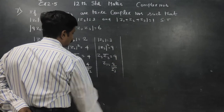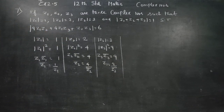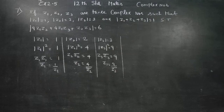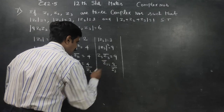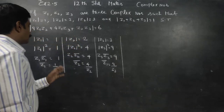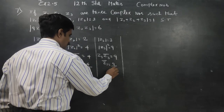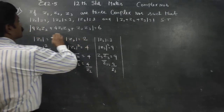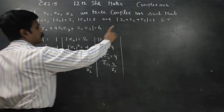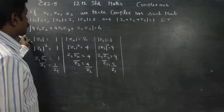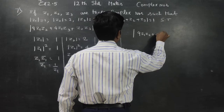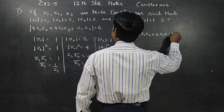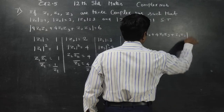After establishing these three results — z1 conjugate equals 1/z1, z2 conjugate relates to z2, z3 conjugate relates to z3 — and using the given information that z1 plus z2 plus z3 is equal to 1, we need to prove that the expression 9·z2·z1 plus 4·z1·z3 plus z2·z3 equals 6.